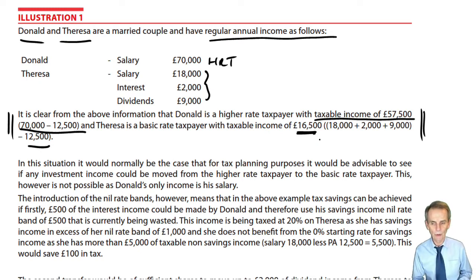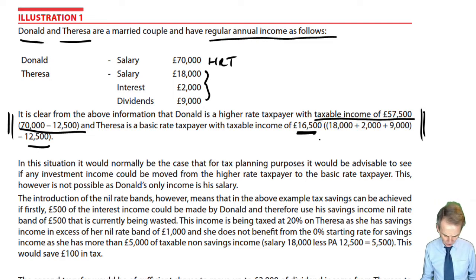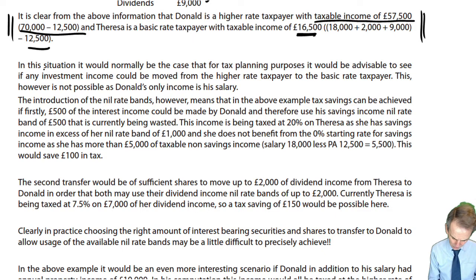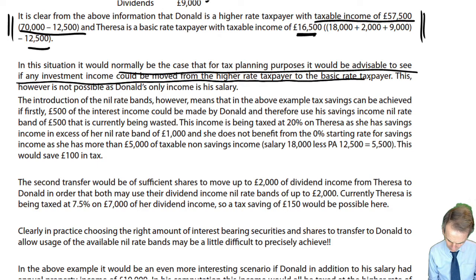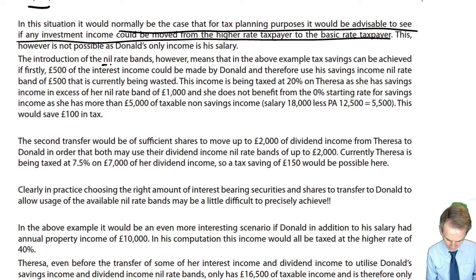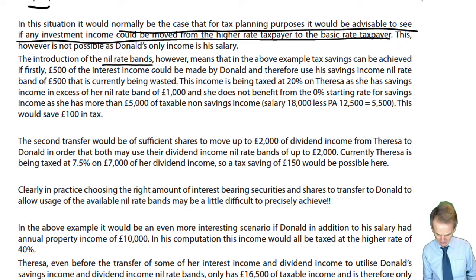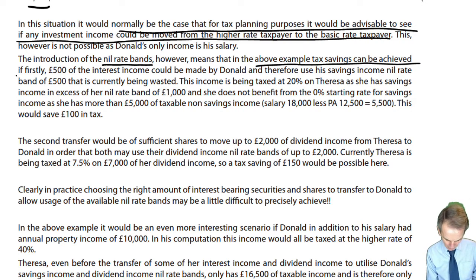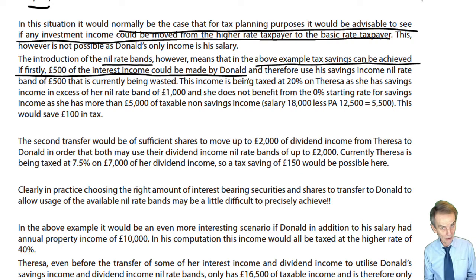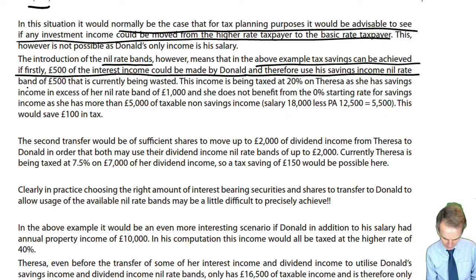Here the amounts are small and the tax rates are low. Normally for tax planning purposes we look to see if investment income could be moved from the higher rate to the basic rate taxpayer. That's not possible here because Donald doesn't have any such investment income. But now with nil rate bands introduced for both savings income and dividend income, tax savings can be achieved if £500 of the interest income could be made by Donald, as a higher rate taxpayer, therefore using his savings income nil rate band of £500 that is currently being wasted.